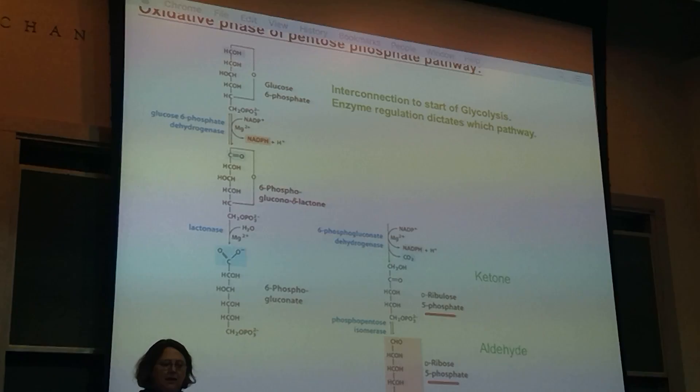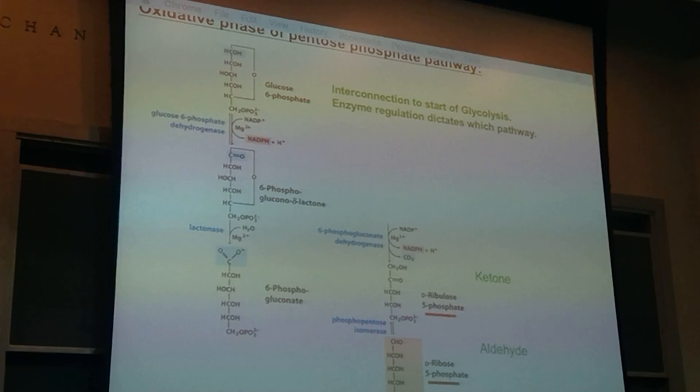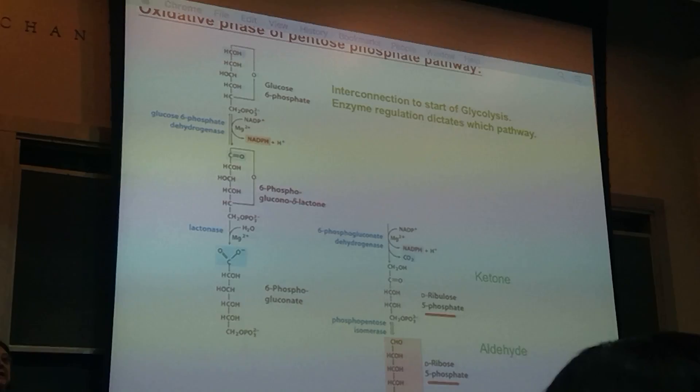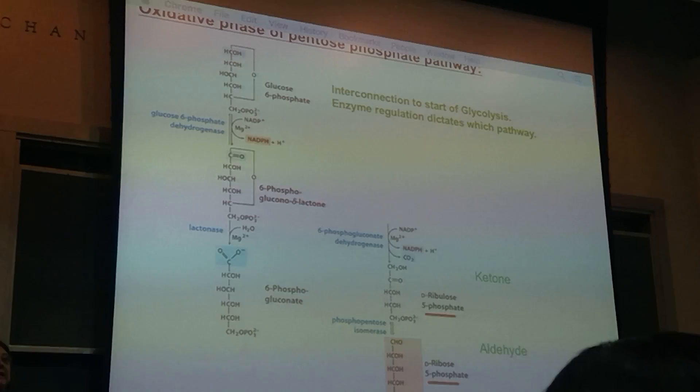There were two reasons to use this pathway: one is if you have really actively dividing cells needing a lot of precursors for DNA and RNA, and another is if you need a lot of NADPH to degrade a xenobiotic through reductive mechanisms.